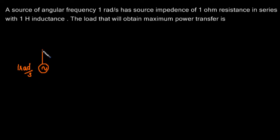And the source impedance consists of 1 ohm resistance and 1H inductance. Now we have to find out what is the load, say ZL, that maximizes the power transfer to it. Now what is the impedance of the source?